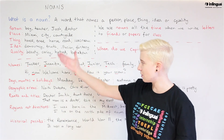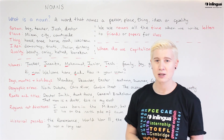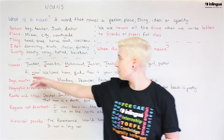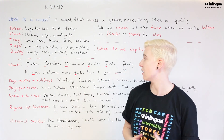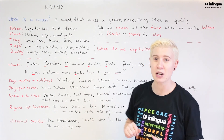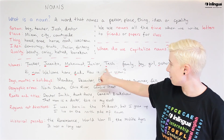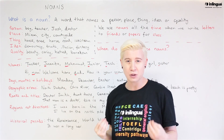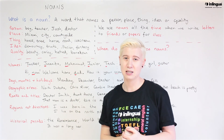Here are some examples of categories that we would always capitalize. For names: Tucker, Juanita, Mohamed, Junior, Tash. You can see I've underlined them in red. The names of a specific person need uppercase letters.